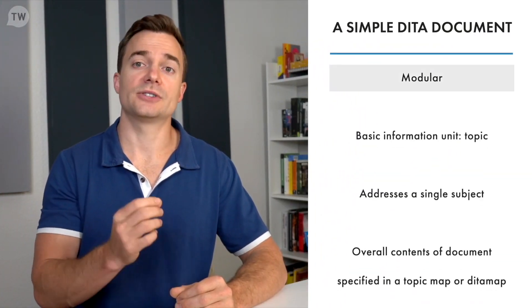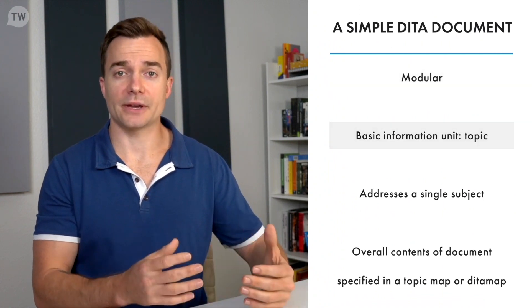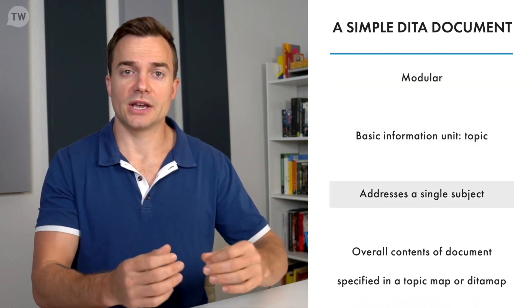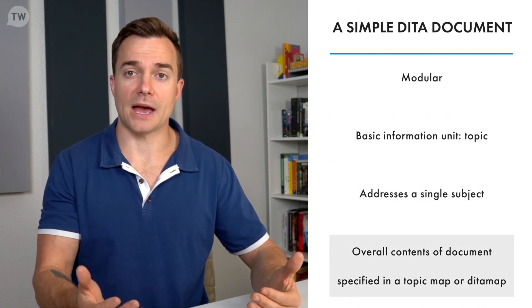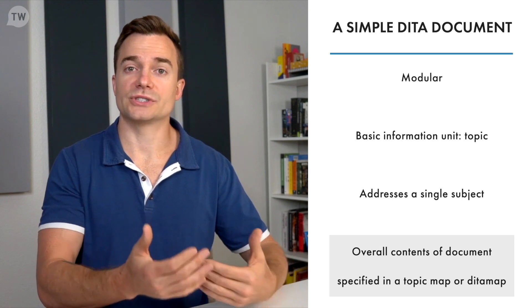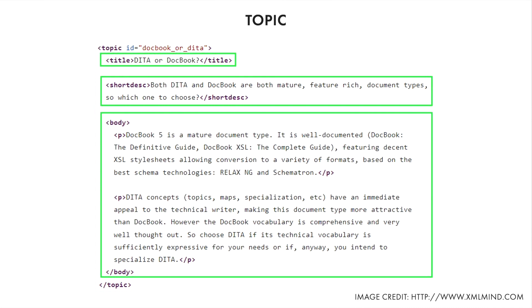A special DITA file called a map, or DITA map, specifies topics included in a deliverable document. The DITA map does not store content — it contains pointers to topics that contain content. The DITA document is modular. The basic information unit called a topic addresses a single subject. You specify the overall content of a DITA document in a topic map or DITA map, which contains a hierarchy of topic references.